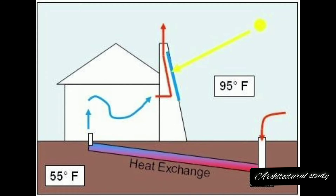Working of the Earth-Air Tunnel — Air Intake: Outdoor air enters through a vent or wind catcher; the depth of the tunnel should be more than 2m, or between 3m and 4m. Underground Heat Exchange: Air flows through the buried pipes, exchanging heat with the surrounding soil. Preconditioning: Pre-cooled or pre-heated air exits the pipes. Building Integration: Air enters the building's ventilation system.